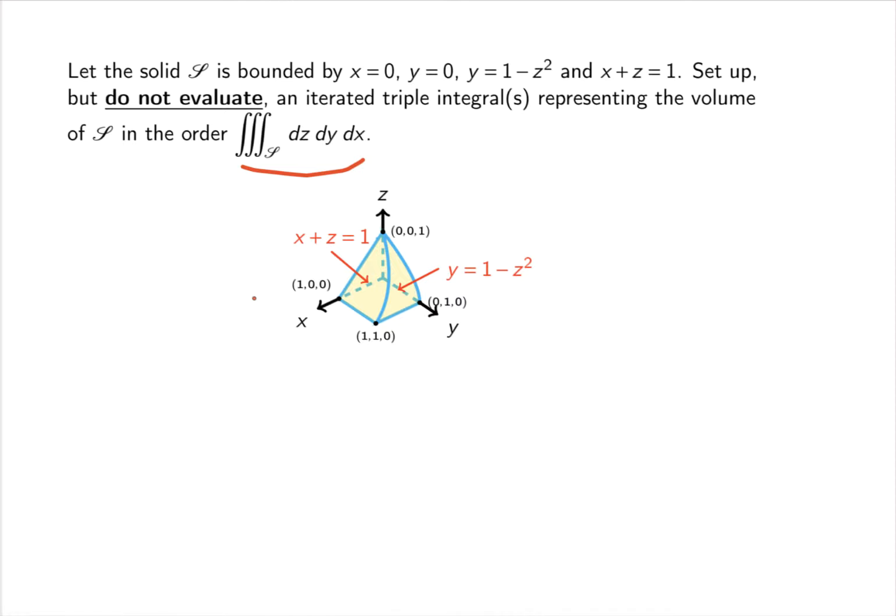The first thing I notice is that if I draw an arrow in the z direction, it depends on where I'm standing. It could be from the xy plane all the way to this plane x plus z equals 1, or it could be from the xy plane to this other thing. That other thing is y equals 1 minus z squared, which is basically the parabolic cylinder right there.